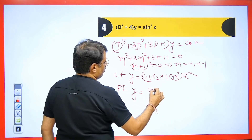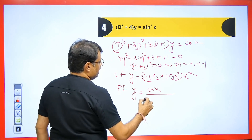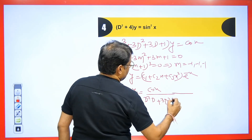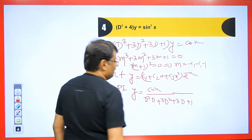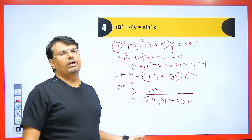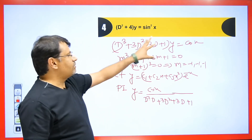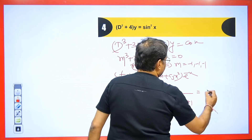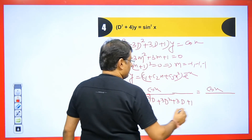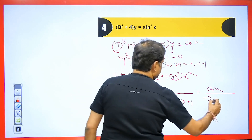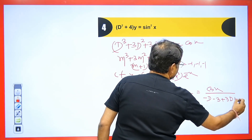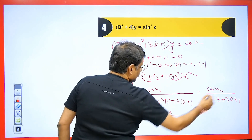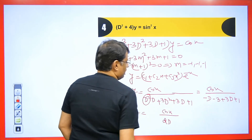PI: y = cos x / (D³ + 3D² + 3D + 1). For a cubic term, write D³ as D²·D. Put D² = −1 wherever it appears. So we get cos x / (−1·D + 3·(−1) + 3D + 1) = cos x / (−D − 3 + 3D + 1) = cos x / (2D − 2).